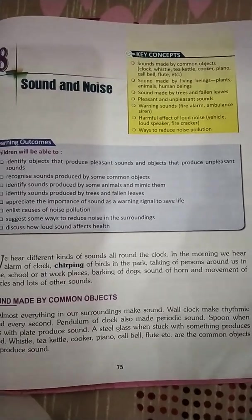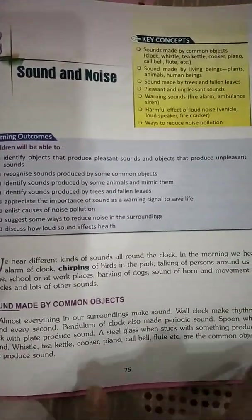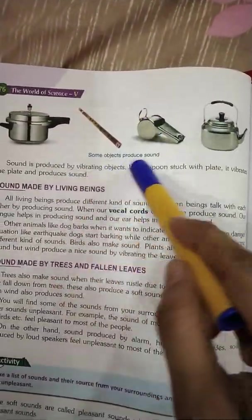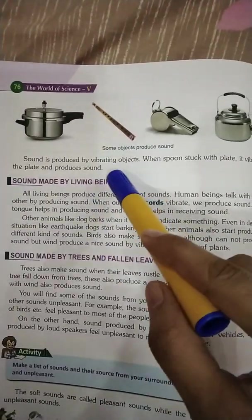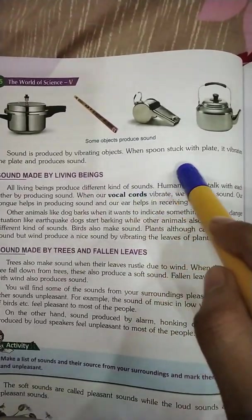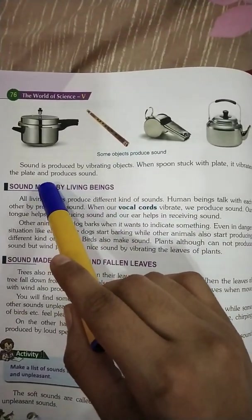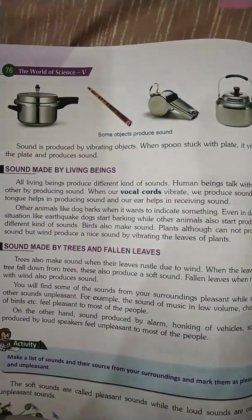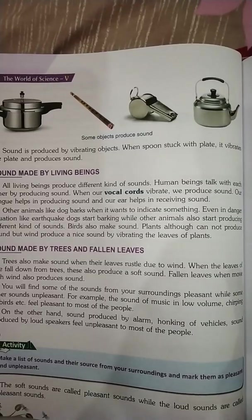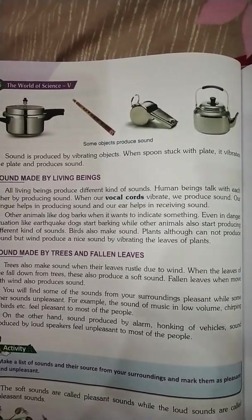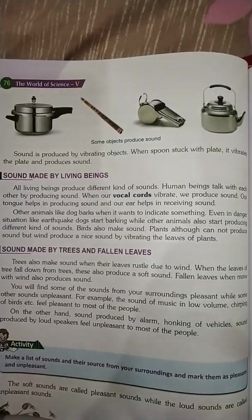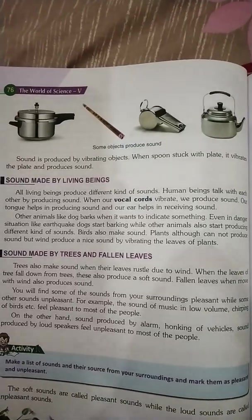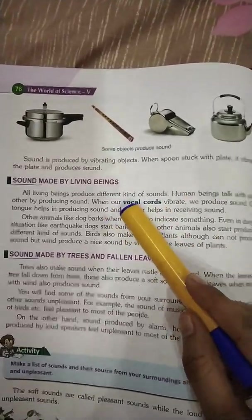Here are pictures of things — common things which make sound. Sound is produced by a vibrating object. When a spoon is struck with a plate, it vibrates the plate and produces sound. Sound is produced by vibration. Now let's see sound made by living beings.